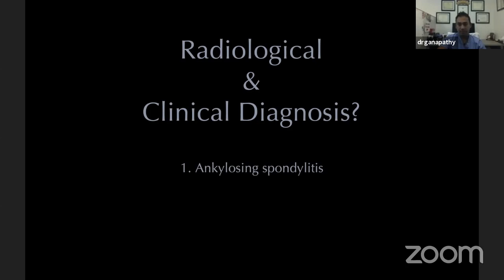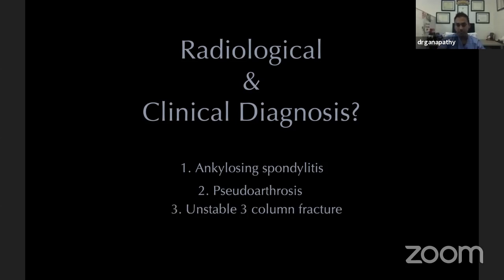The radiological and clinical diagnosis here is ankylosing spondylitis, evident from the ankylosing appearance on X-rays — though it's important to differentiate this from other diagnoses such as DISH. This patient also has pseudoarthrosis — what used to be called spondylodiskitis in AS because it was mistaken for infection, but it turns out to be a pseudoarthrosis or nonunion. This patient also has an unstable three-column fracture.